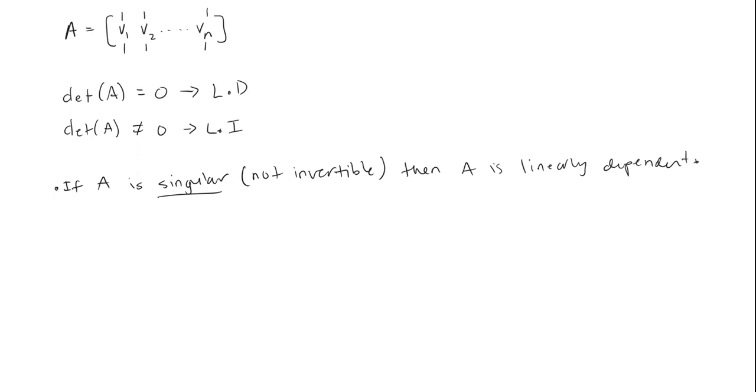That's very interesting. If A is a singular matrix, the determinant equals 0. Singular matrices are not invertible. Matrices with determinants equal to 0 and matrices that are not invertible have a linearly dependent set of vectors. The matrix itself is linearly dependent.